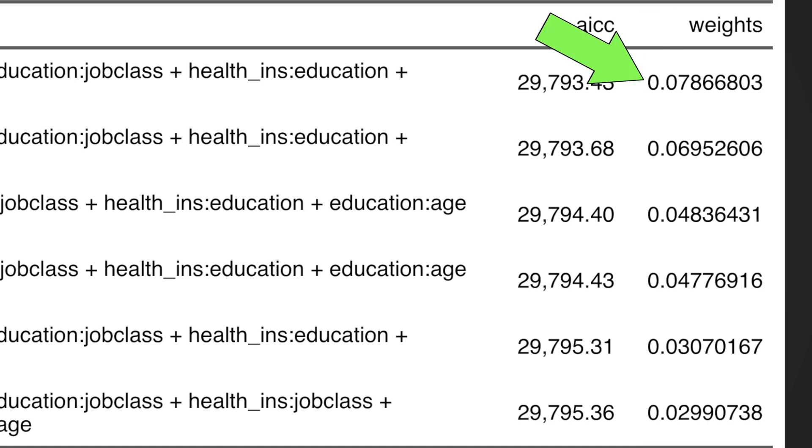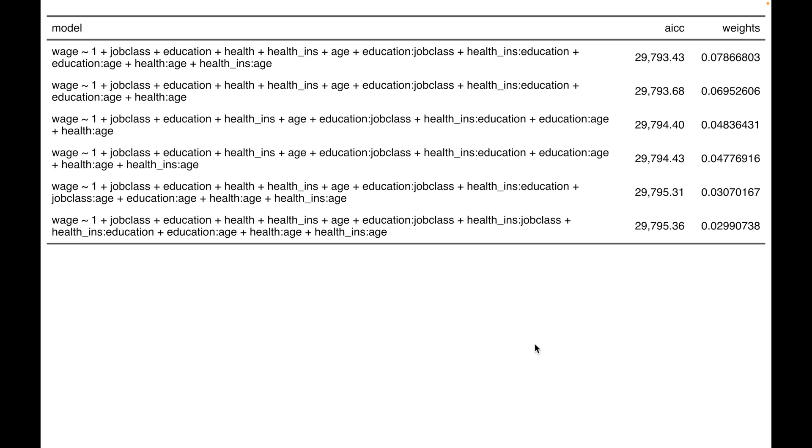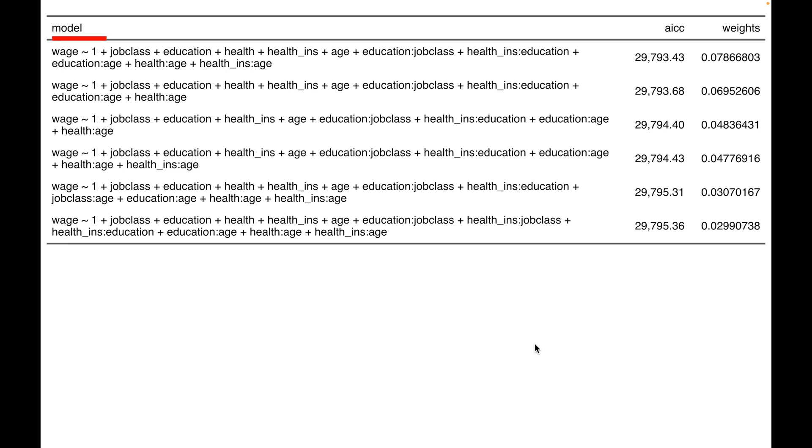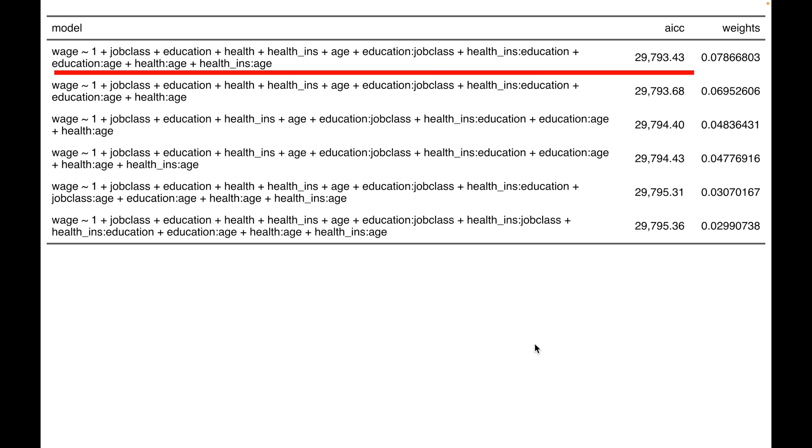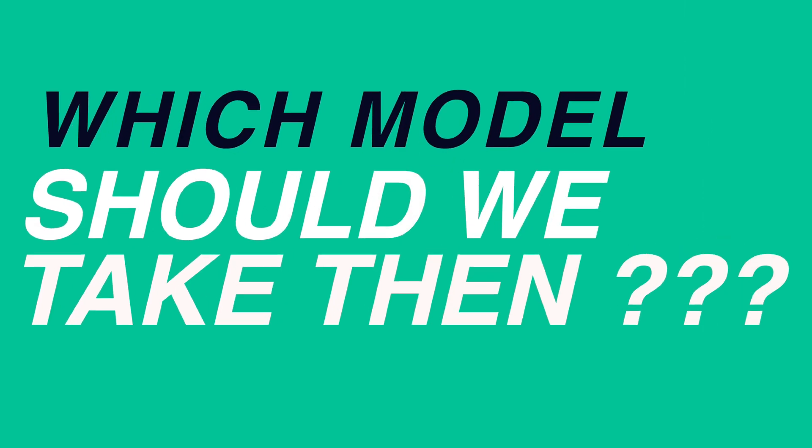So while the best model has the highest weight, its weight in this example is not substantially larger than that of the second model and of the third, fourth, and so on. So we shouldn't be all too certain here that the top model is really the best model in the set. Several models are almost equally plausible. So which model should we take then?